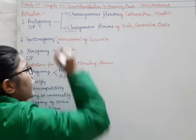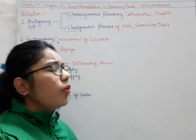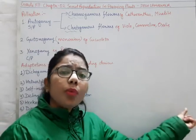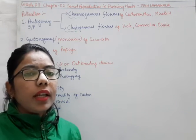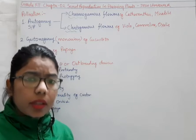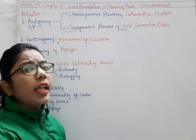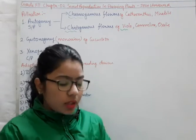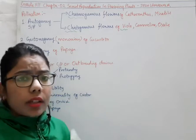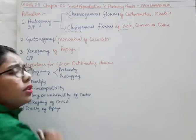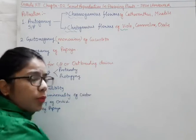A cleistogamous flower means something which is closed. If it is closed, no pollens will come inside this type of flower. The cleistogamous flower never opens before pollination. Important examples mentioned in the NCERT are Viola, Commelina, and Oxalis. In this type of flower there can be cleistogamy where no pollen should enter inside it.